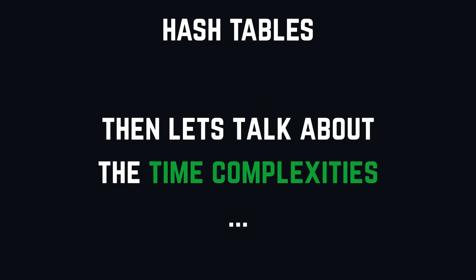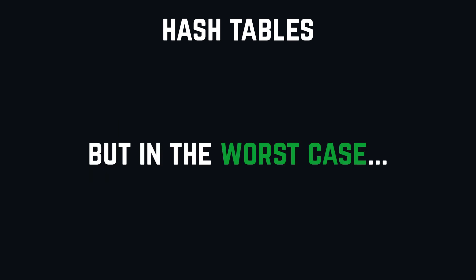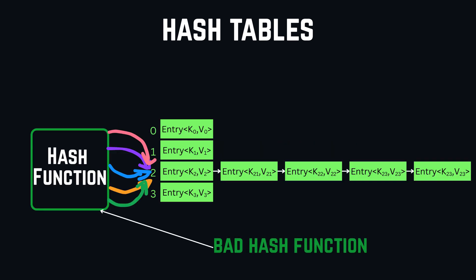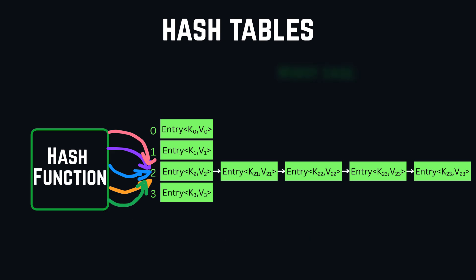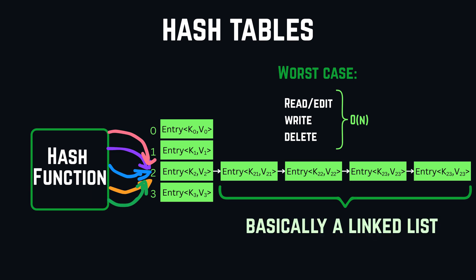For the average case, read, write, and delete operations in a hash table are all O(1). But in the worst case — for example, if the hash function is poorly designed and causes many collisions — our operations could slow down to O(N), because we would potentially just have a linked list.